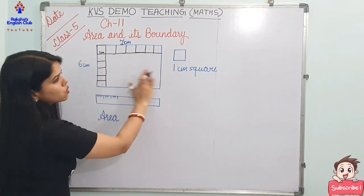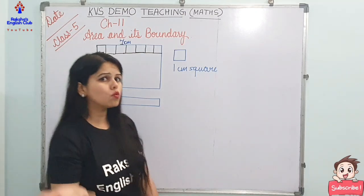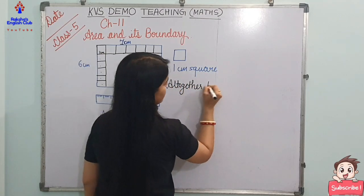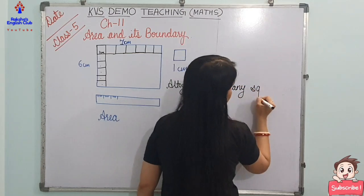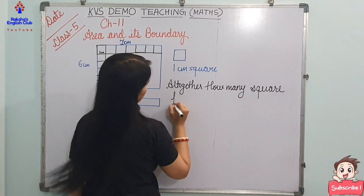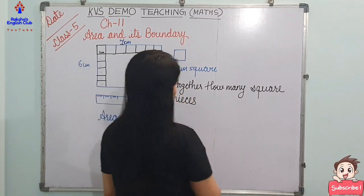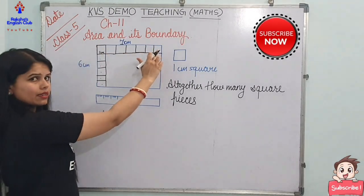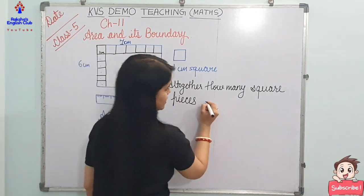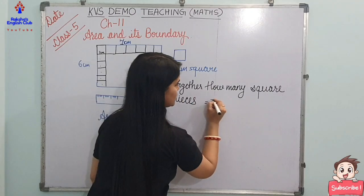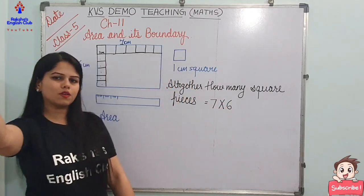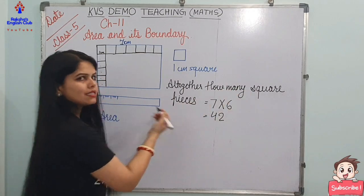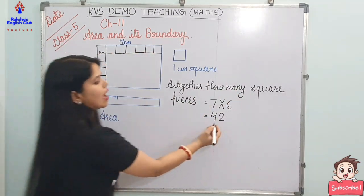In this way, I have to cover the whole rectangle. Who can tell me how many square pieces I need altogether? I don't want you to waste time — do it quickly and intelligently. Here we have seven and here we have six, so without counting, we do seven into six. Who knows the table of seven? It's 42. So total square pieces needed to cover the rectangle are 42.